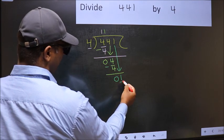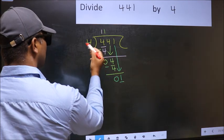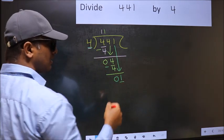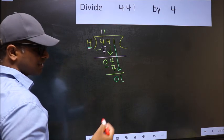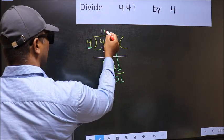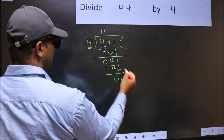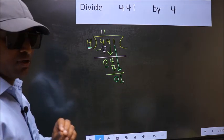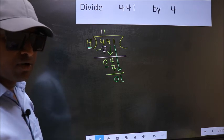Here we have 1 and here 4. 1 is smaller than 4. So, what many do is, they directly put a dot and take 0. Which is wrong. Why is it wrong?